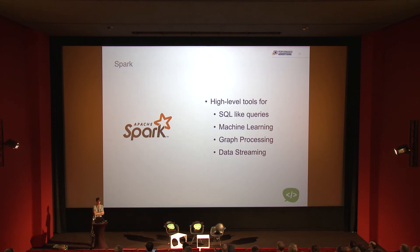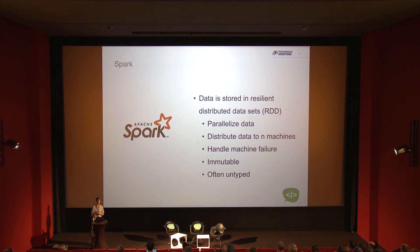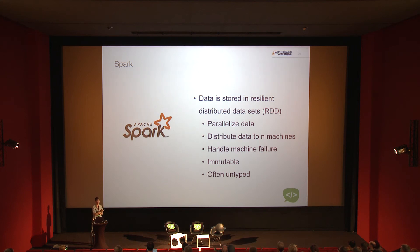The key component in Spark is the RDD — Resilient Distributed Dataset. You can use it to parallelize your data: load a 15-terabyte CSV file and Spark converts it into RDDs, distributing data across ten machines. It also has a fault-tolerance mechanism — if one of your machines fails, Spark can take the data that was sent to that machine and ship it to another for reprocessing, so you don't have complete failure. RDDs are also immutable because of functional programming.